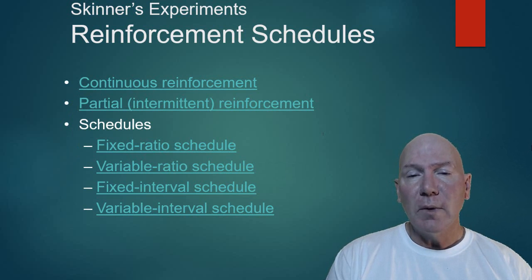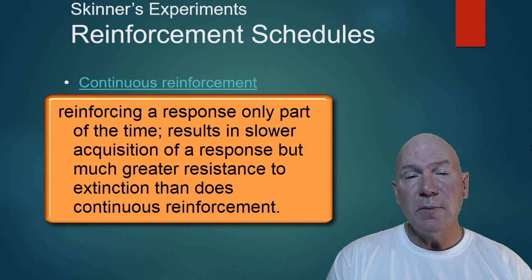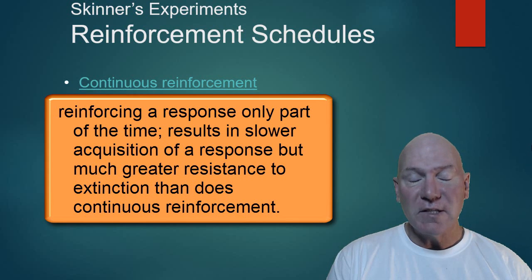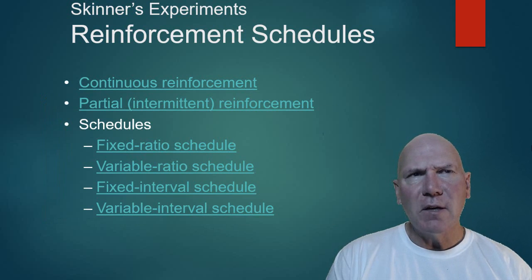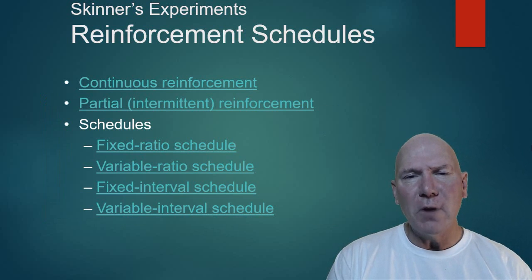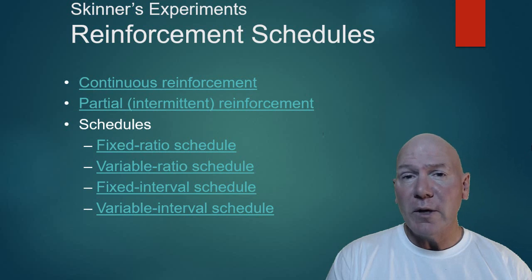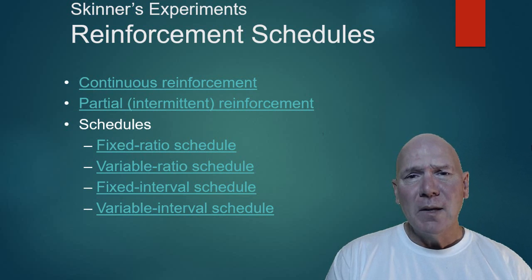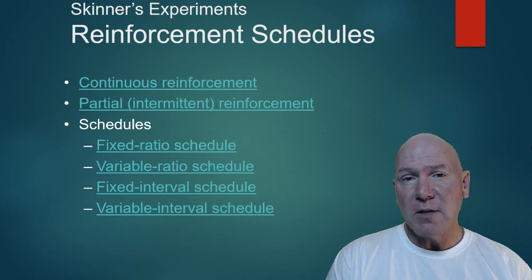If you're training a dog and you reinforce it every time it sits, it will learn that behavior more quickly. However, with partial schedules — where we don't give reinforcement all the time — it actually seems to stave off extinction and can be more reinforcing. Think of pushing a button on a wall and five dollars comes out each time. If it suddenly stops, you push harder and faster, and when it pays again, it's hard to leave.